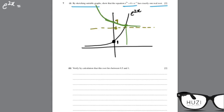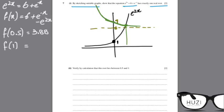e to power 2x equals to 6 plus e to power minus x. You bring everything on one side. So, this would be 6 plus e to power minus x minus e to power 2x. When x equals to 0.5, the answer is 3.88. And when f equals to 1, your answer is minus 1.02. So, you write that due to sign change, it's verified that the root lies between 0.5 and 1.